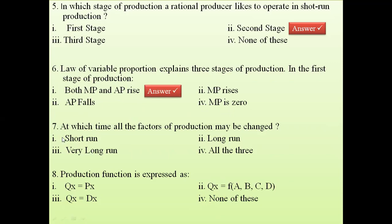Question 7: at which time can all the factors of production be changed? It is very obvious — in the long run, all factors of production can be changed. In the long run there is no definite period of time, whereas in the short run there is a very definite period, so some factors are fixed and some are variable. In the long run, everything can be changed.